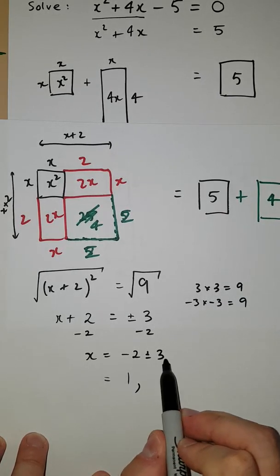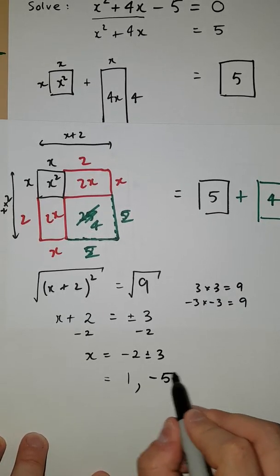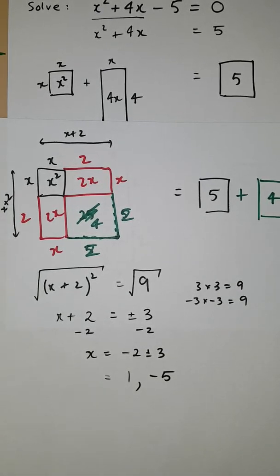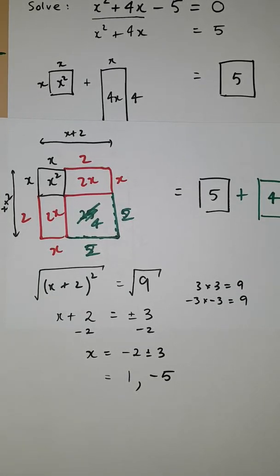The other one is going to be -2 - 3, which gives us -5. So that's our solution via the completing the square method.